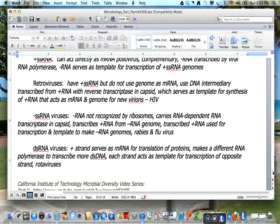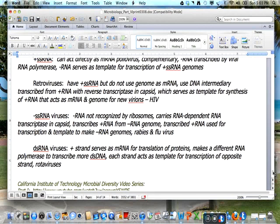Retroviruses have a positive sense single-stranded RNA, but do not use the genome as mRNA. Instead, they use a DNA intermediary transcribed from the positive sense RNA. Reverse transcriptase in the capsid is used for this.